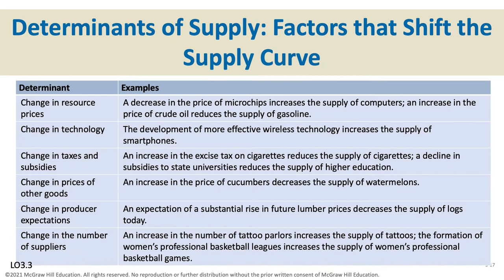Here is your summary of all supply shifters, just like we had a summary for demand shifters: a change in resource prices, change in technology, taxes and subsidies, price of substitute production goods, change in the number of suppliers, and change in producer expectations.